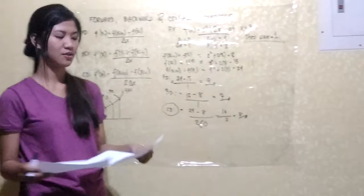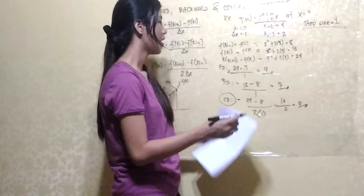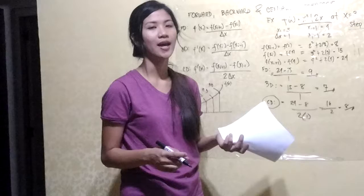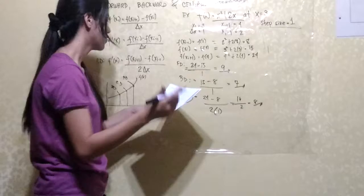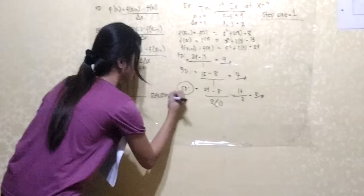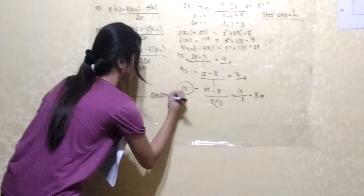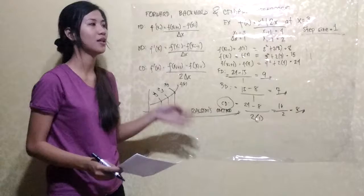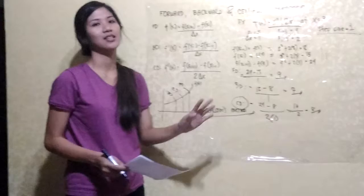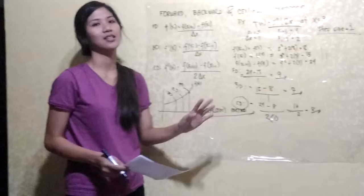Also, for Ralston's method, the same general procedure applies. Ralston's method is for solving differential equations. I want to make it clear that this is a separate topic — the previous section was for finding derivatives, while Ralston's method is for differential equations. I'm including it here since I've already covered differential equations in other tutorials and it is very similar.